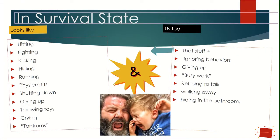The survival state looks like all of these things. In school-age kids, the most that you're going to see — and you already know this — is fighting. Sometimes there's running, sometimes there's physical fits, especially with your younger ones. You might see them shutting down or giving up — this is when they've completely given up and they won't respond to you. Sometimes it's crying. And in us, when we are in our survival state, we can do all of those same things.